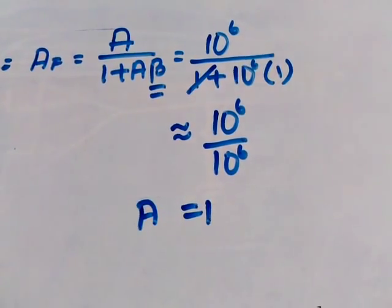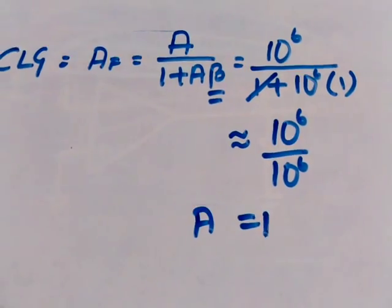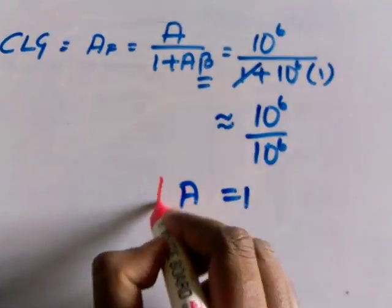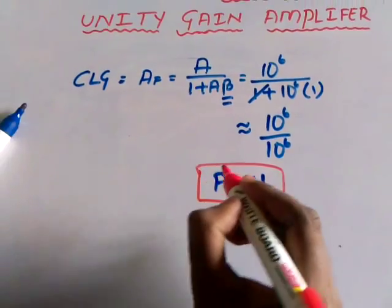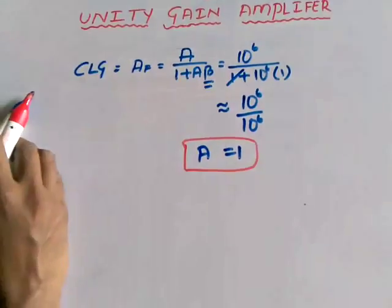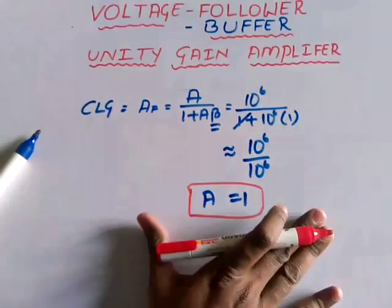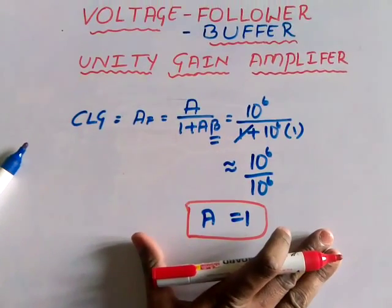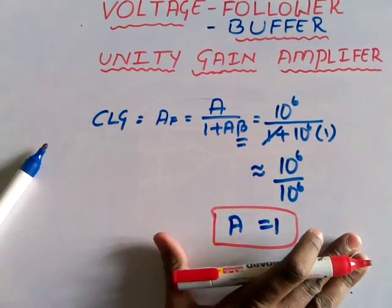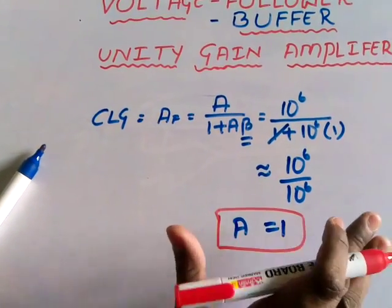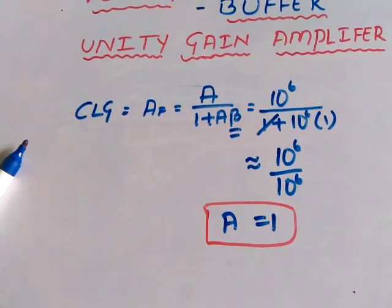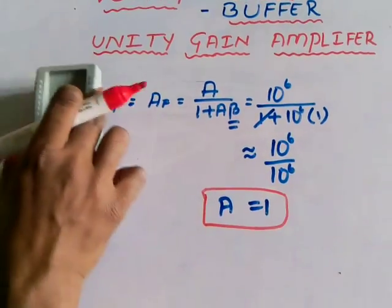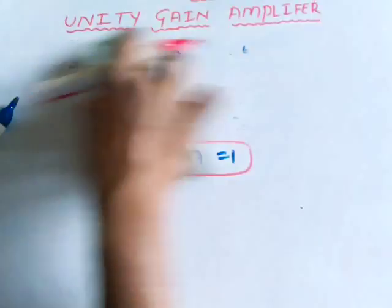This is the major achievement by this device, that is, gain is equal to 1. Why? Because in the practical world, the achievement of a gain equal to 1 is highly impossible. Let me prove how it is.